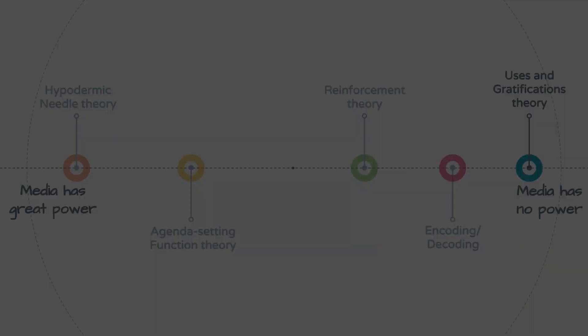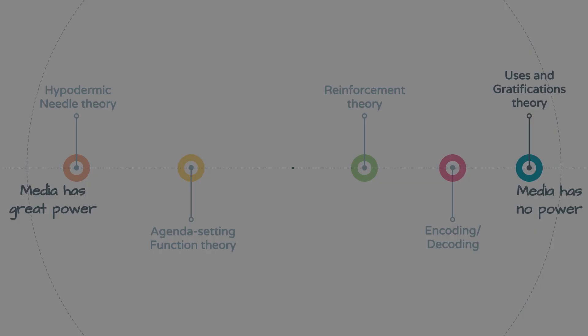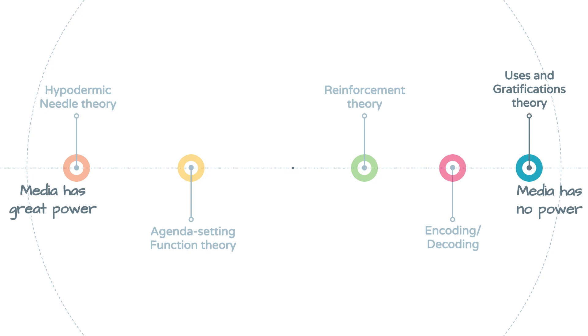The Uses and Gratifications Theory sits at the complete opposite end of the spectrum to the last theory we looked at — the Hypodermic Needle Theory. You'll remember that this theory said that the media held a great amount of power over audiences.